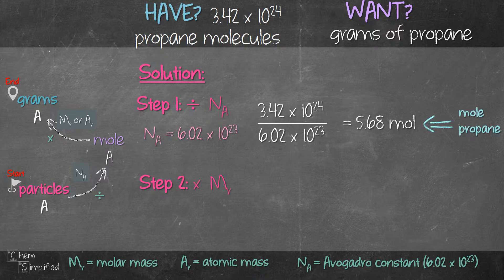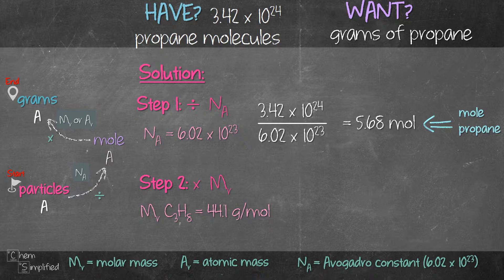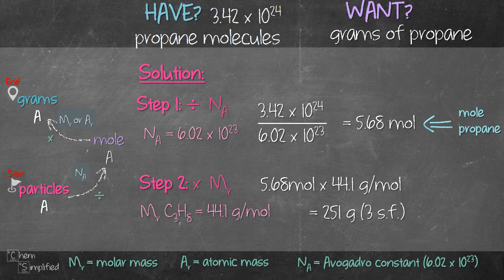Moving on to the next step, we need to multiply what we got from step 1 by the molar mass of propane. If we look up the periodic table and calculate the molar mass, it turns out to be 44.1 grams per mole. If you need a refresher on calculating molar mass, I'll link the video on the top. So from step 1 we got 5.68 moles — we take that and multiply by 44.1 grams per mole and we get 251 grams, in three significant figures. That is the grams of propane, which is what the question wants us to find. So we're done.